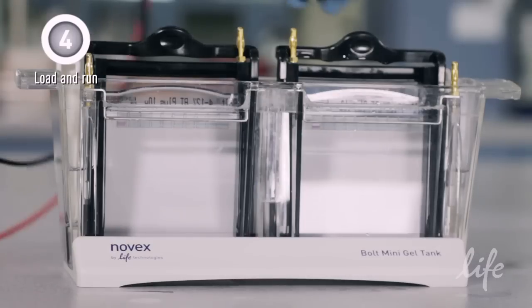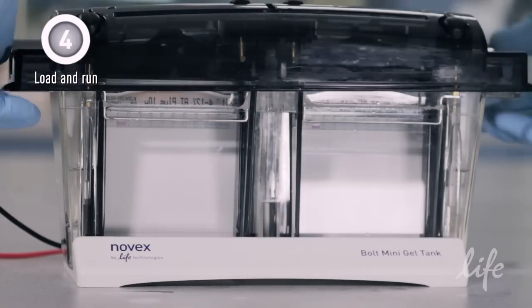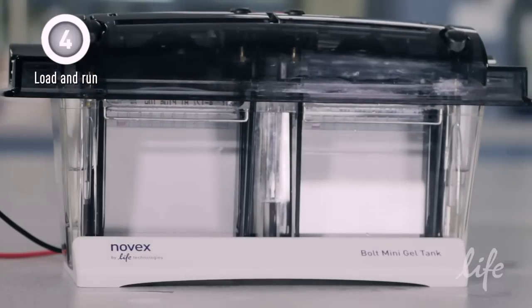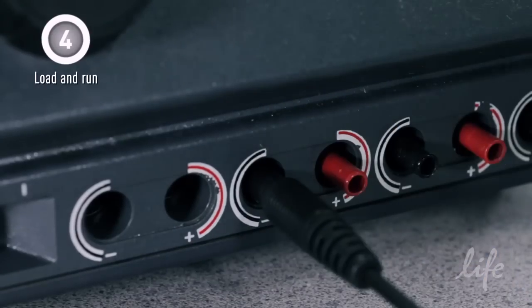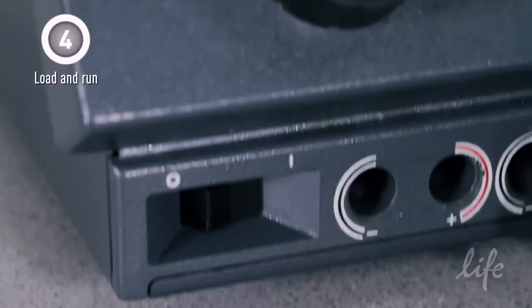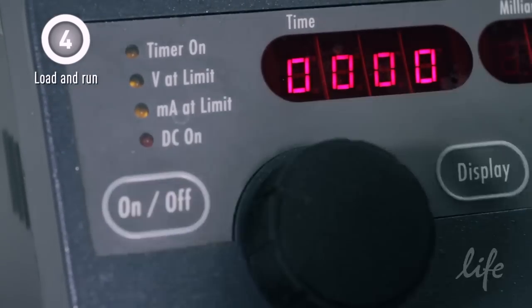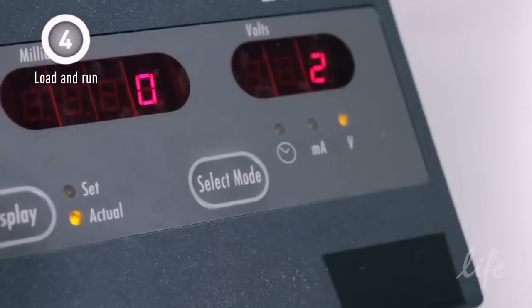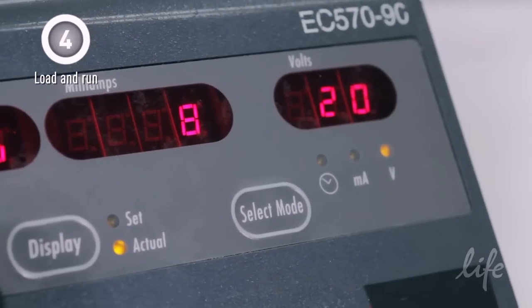Place the lid on top of the tank and align the electrodes over the corresponding banana plugs. Connect the electrode cords to the power supply. Turn on the power and press start. Set the power supply to a constant 165 volts.